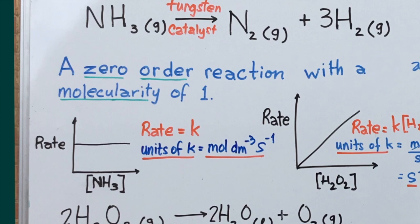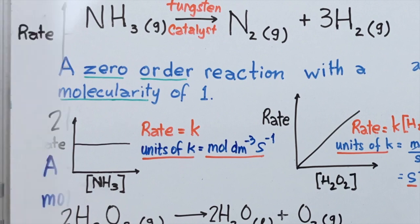The units of this rate constant would be the very same units of rate, which is moles per unit of volume — moles per dm³ per unit of time, per second. To summarize: a zero order reaction, molecularity of one, and the units of the rate constant for this zero order reaction are mol dm⁻³ s⁻¹.